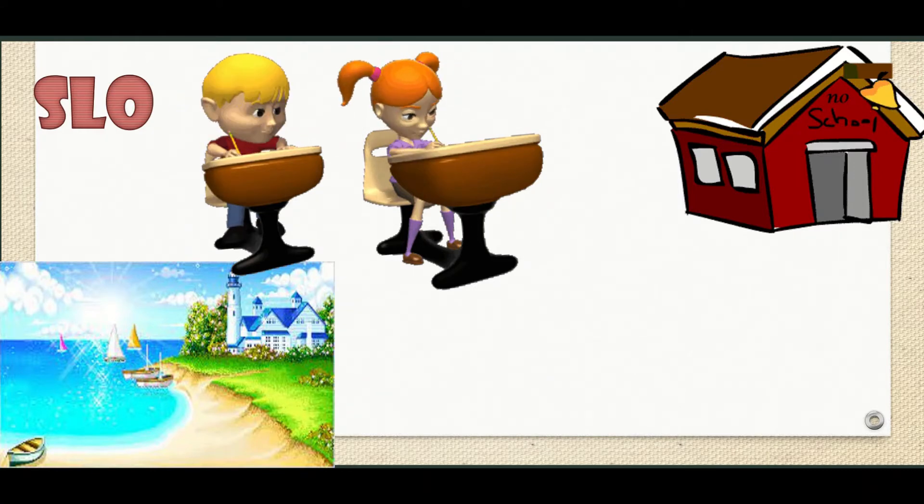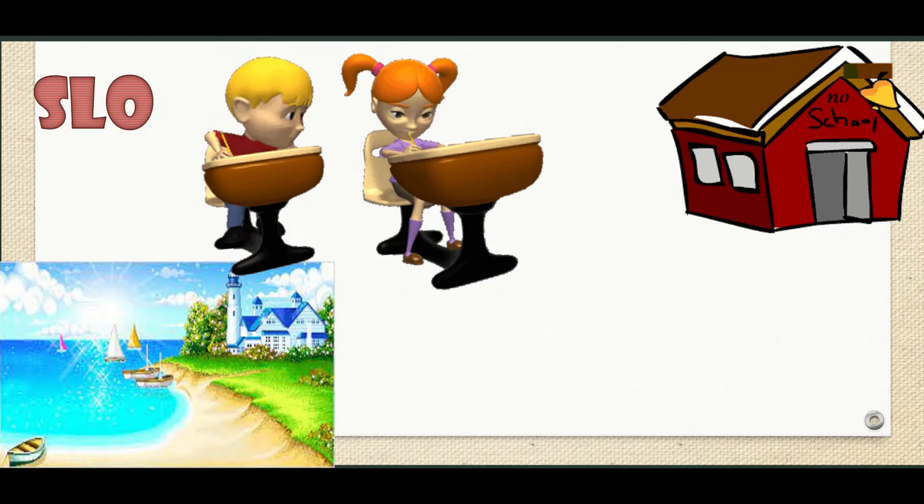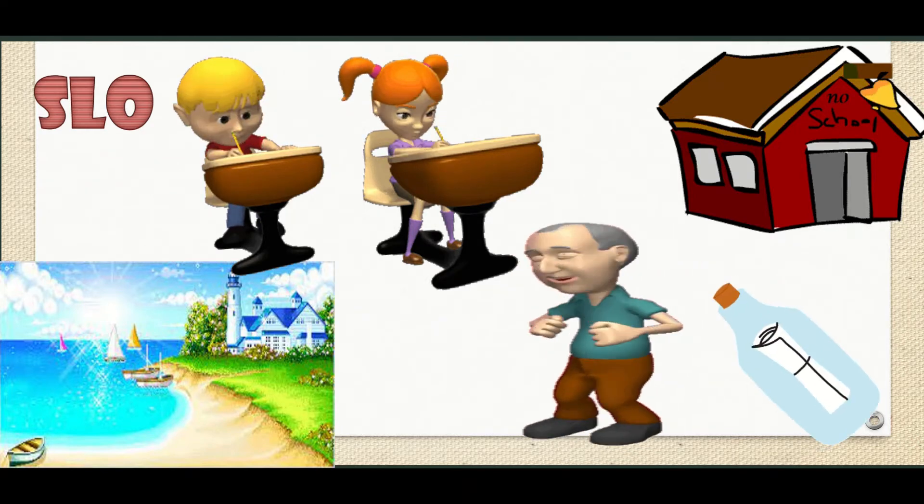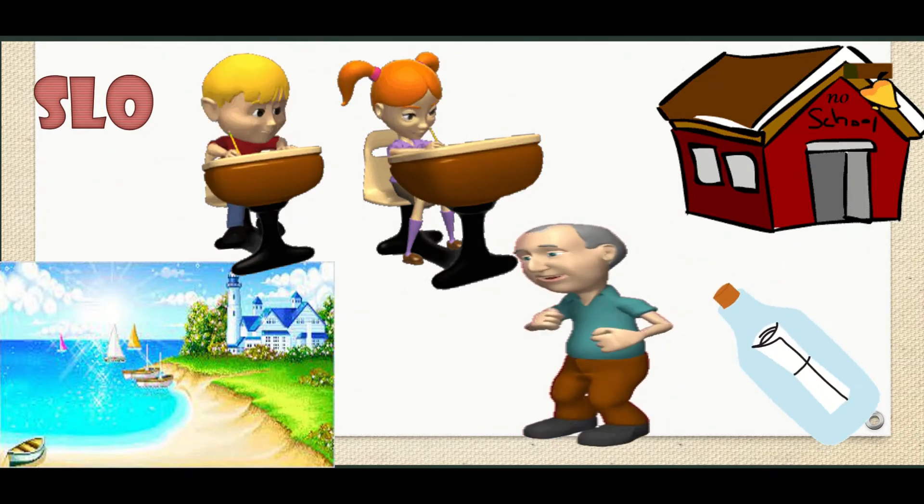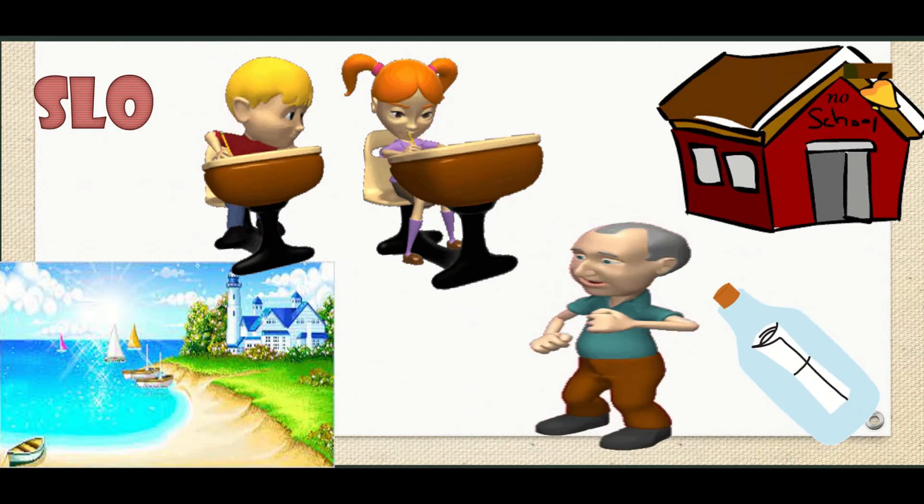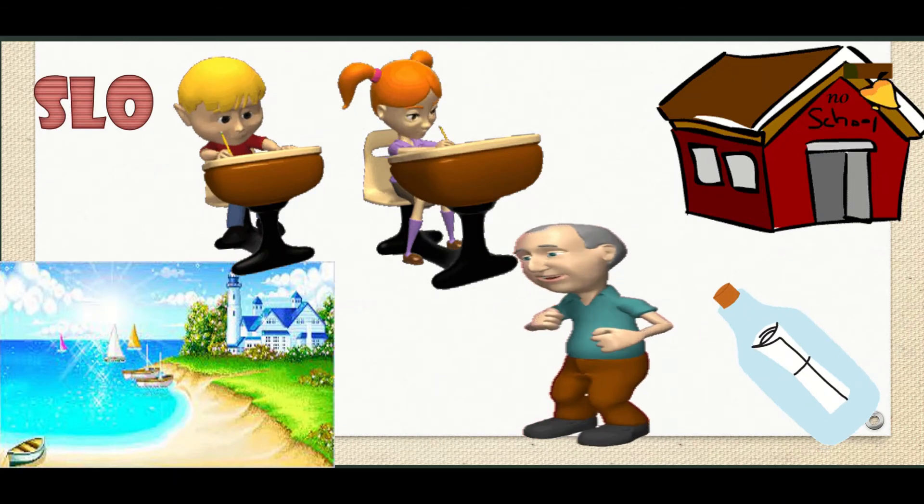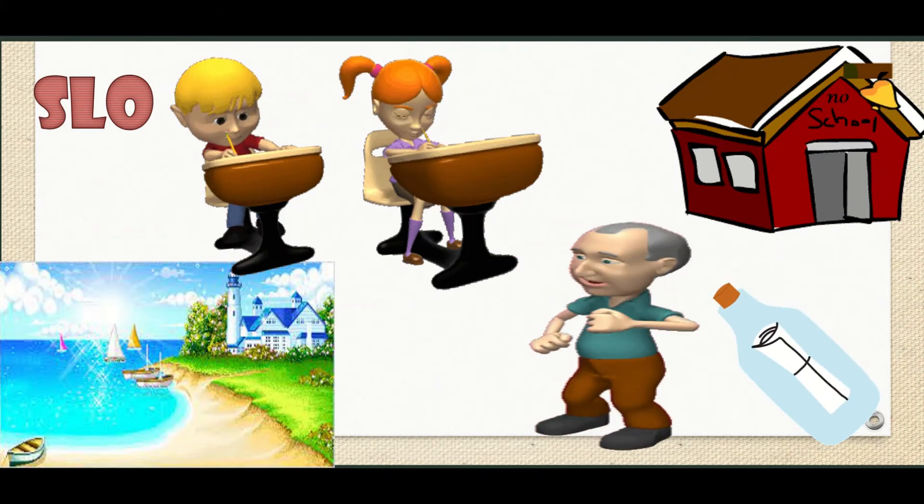But here you can see I have shown us a graphic in which both are writing. How was it possible? Well, one day while playing they found a message in the bottle and they realized that they can't read it because they are not able to read and write. There is no school in their village, they have never learned it.